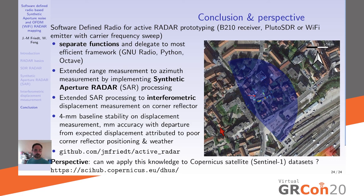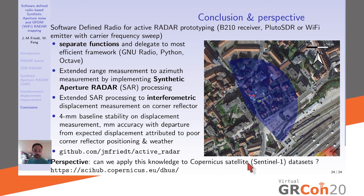In conclusion, this work demonstrates using software-defined radio to build an SDR-based radar system employing spectrum spreading techniques — both noise radar and OFDM — leveraging GNURadio, Python, and Octave. The analysis was extended to synthetic aperture radar, and finally to interferometric displacement measurement, revealing range variation due to local oscillator fluctuations and weather conditions. Processing and acquisition scripts are available on GitHub. Future perspectives include applying this knowledge to satellite radar systems using freely available Sentinel-1 raw IQ datasets from the European Space Agency.